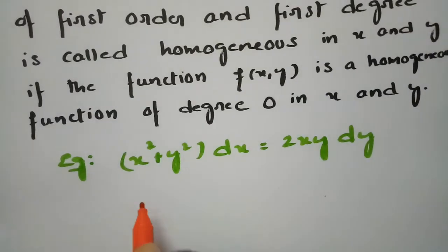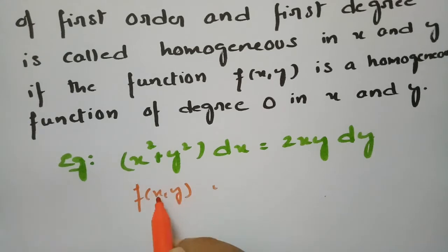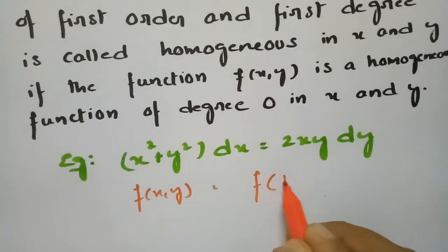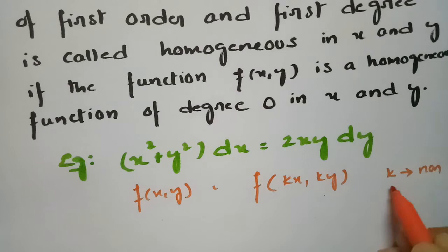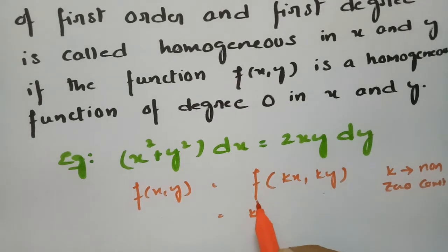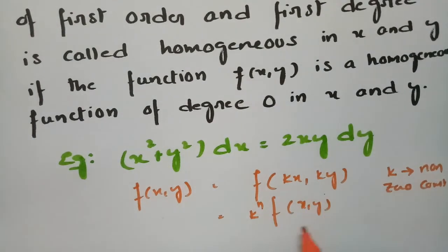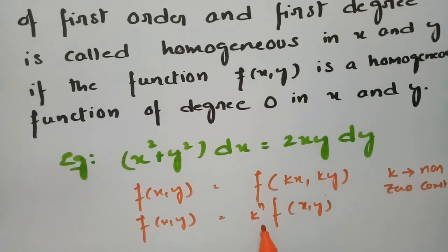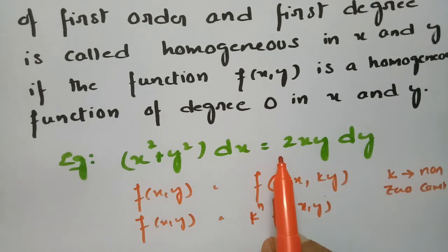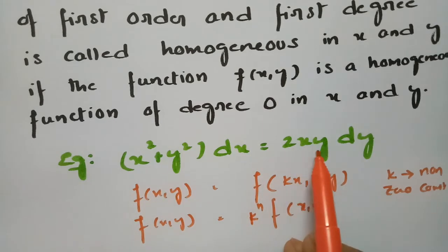If we consider a function f(x, y), and x is replaced by kx and y is replaced by ky, where k is a non-zero constant, then the result is k^n times the same function f(x, y). For example, the equation (x² + y²)dx = 2xy dy is a homogeneous differential equation.